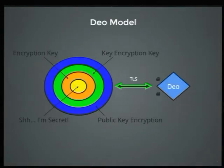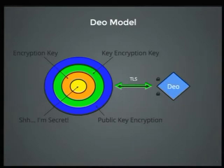This is definitely an improvement. However, we still have some keys here. We have two keys in particular: one for encrypting the channel where the key is being transferred, and second, the asymmetric key pair for doing the public key crypto. This is better — we don't have a full assortment of key arrays — but we still do have some keys, which present some complexity.